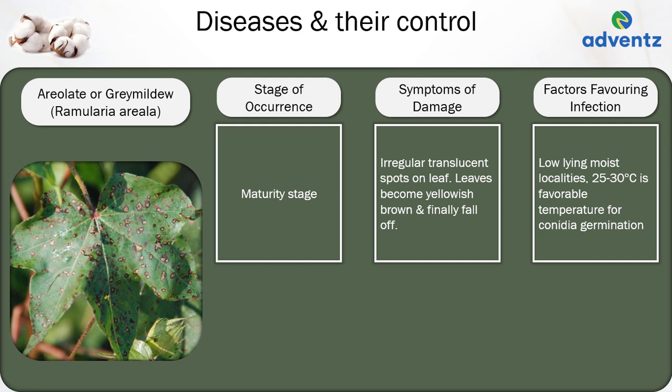The next disease is areolate or grey mildew. The causal organism is Ramularia areola. This disease occurs at the maturity stage. The symptoms of damage are irregular translucent spots on leaves; leaves also become yellowish brown and finally fall off. Low-lying moist localities and temperatures between 25–30°C are favourable for grey mildew infection.